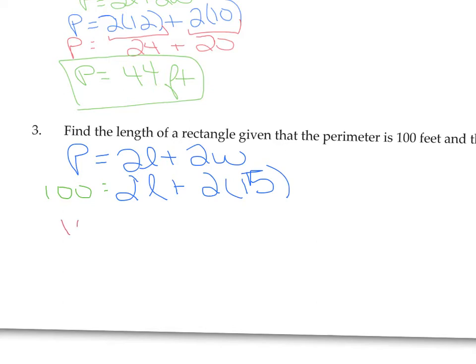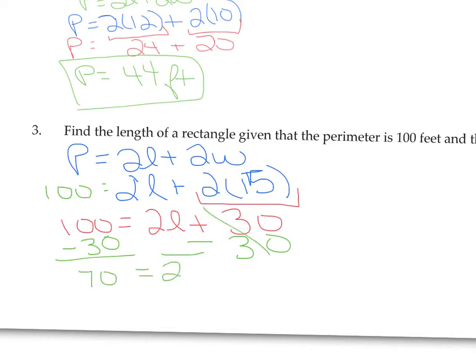So we don't know the length, so we have to leave L in. We can start simplifying. 100 equals 2L plus 2 times 15 is 30. So we're looking at this as an equation. We're trying to solve for L. We're trying to find the length. That's what the question asked us to do. So we're going to undo or isolate this L. So the first thing we have to undo is this plus 30. So subtract 30 from both sides.